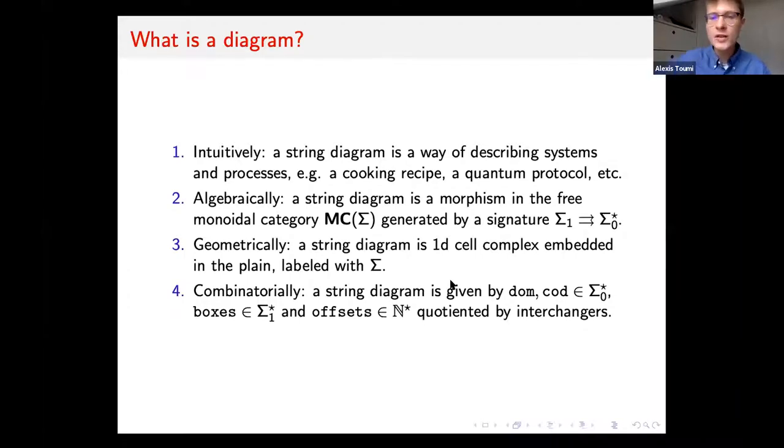The first algebraic answer is that a diagram is a morphism in the free monoidal category generated by some signature. We have a signature sigma, which has arrows sigma one and objects sigma zero. Each arrow has a domain and codomain, which are given by strings of objects.